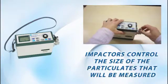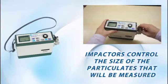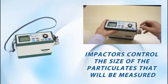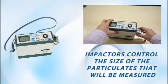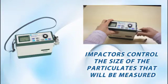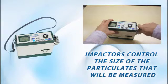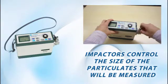Model 3521 comes standard with two impactors: a 10 micron one and a 4 micron one. Model 3522 comes with a single 2.5 micron impactor. These impactors serve as a way to set a cut point for larger particulates — any particle larger than the micron rating of the impactor will not be measured.